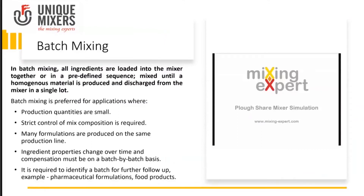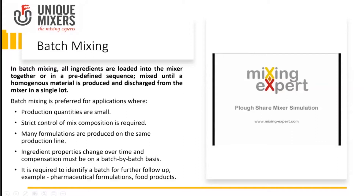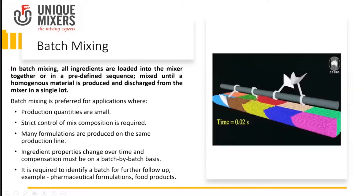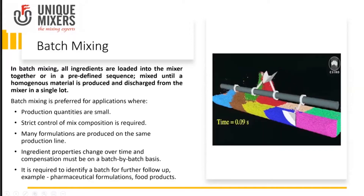We need to understand the process setup, whether it's a batch mixing or a continuous mixing. In a batch mixing process, all the ingredients are loaded into the mixer together or in a predefined sequence and mixed until a homogeneous material is produced and discharged from the mixer in a single lot.